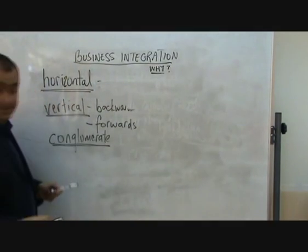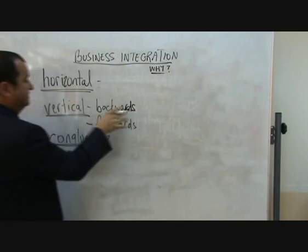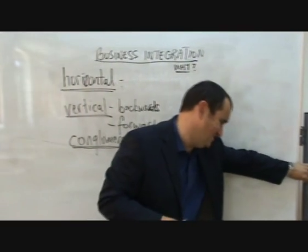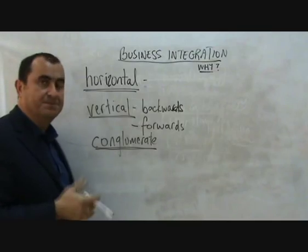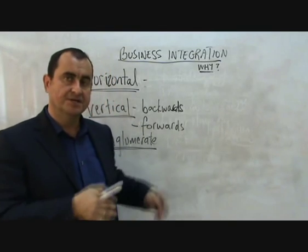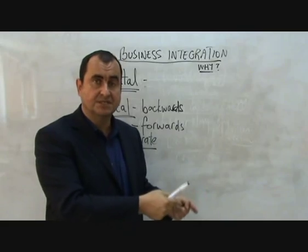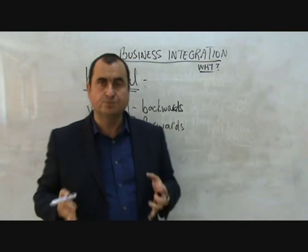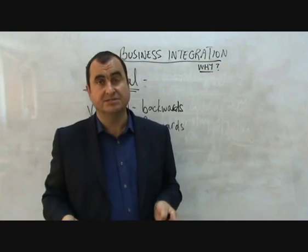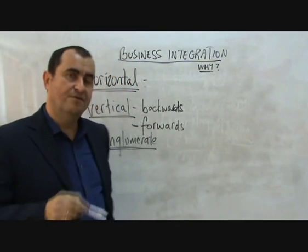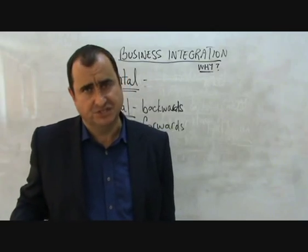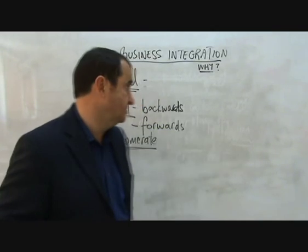Backwards vertical integration is when a business joins with another business in the same industry but at an earlier stage of production — a tertiary sector buying a secondary sector, or a secondary sector buying a primary sector. For example, if a supermarket chain which is tertiary sector bought a food processing factory which is secondary sector, that would be backwards vertical integration. Or if a manufacturer of canned fish bought a fleet of fishing ships, that would be secondary buying primary — also backwards vertical integration.